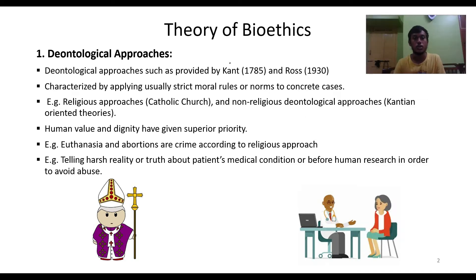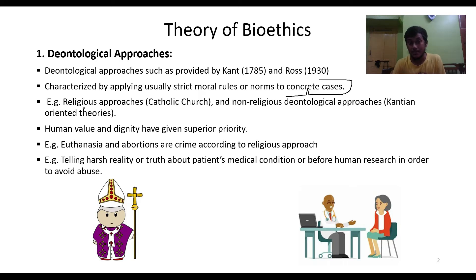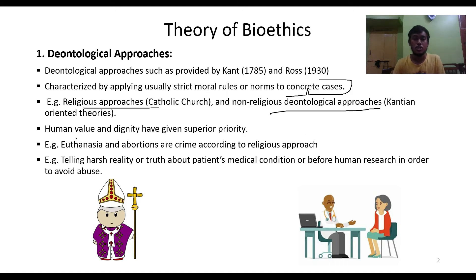The first theory is the deontological approach, which was given by Kant and Ross. It is characterized by applying strict moral rules or norms to concrete cases. Examples include religious approaches and non-religious deontological approaches. Human value and dignity are given superior priority in this particular approach.